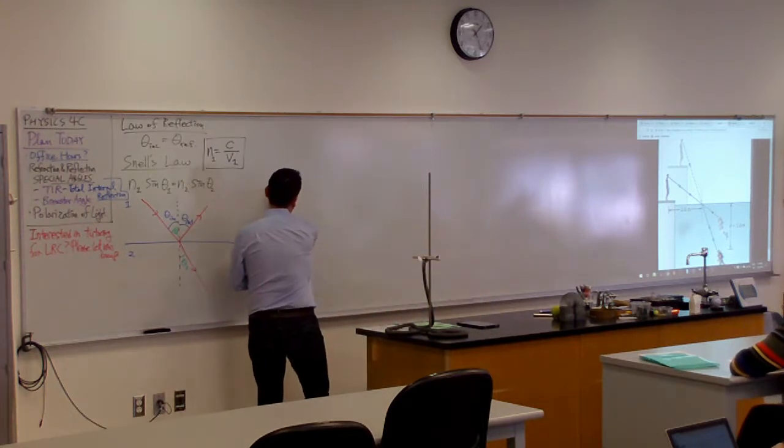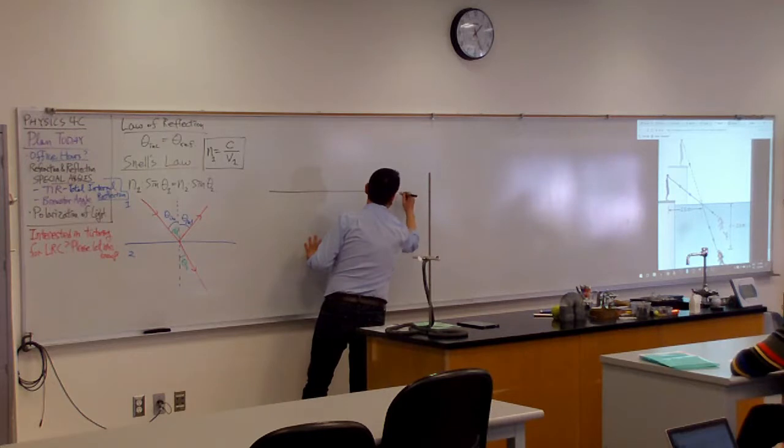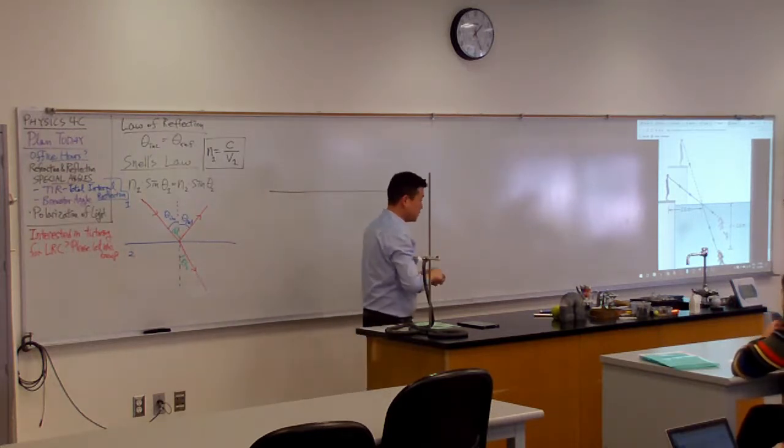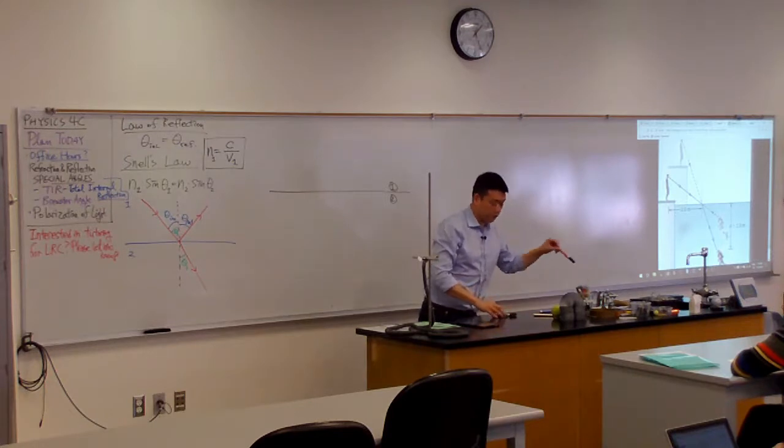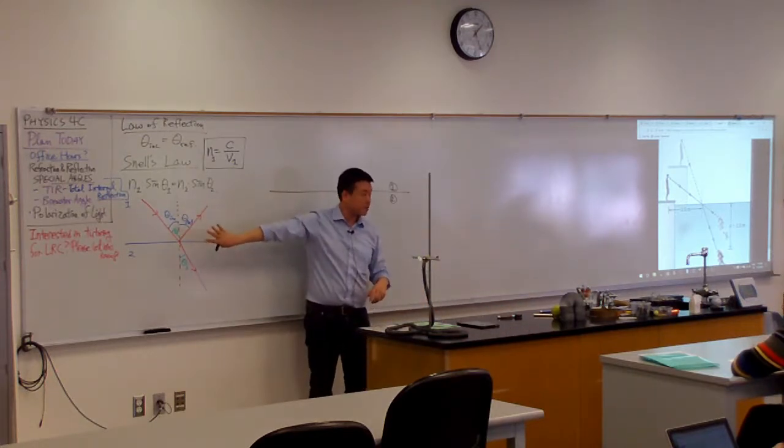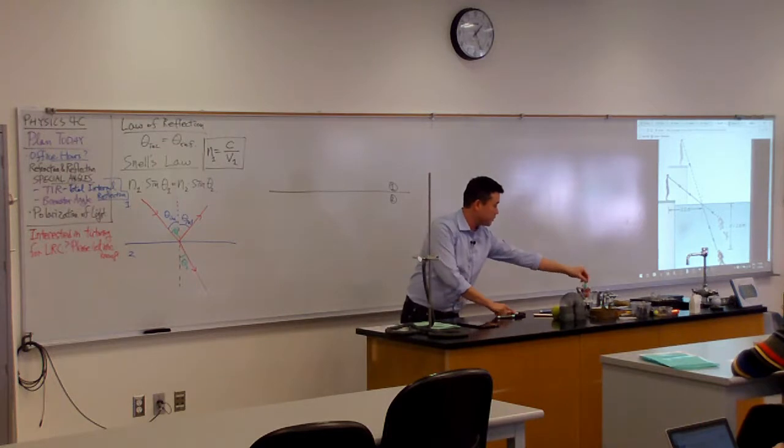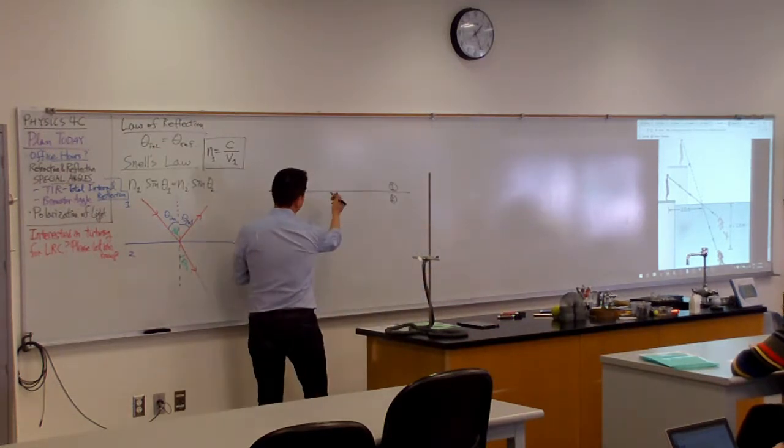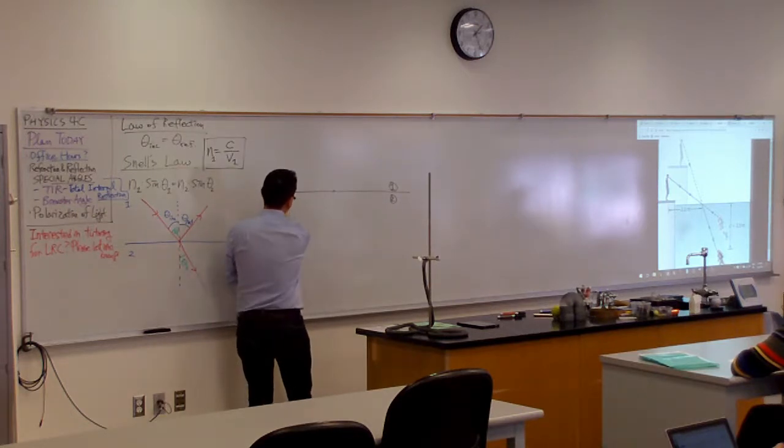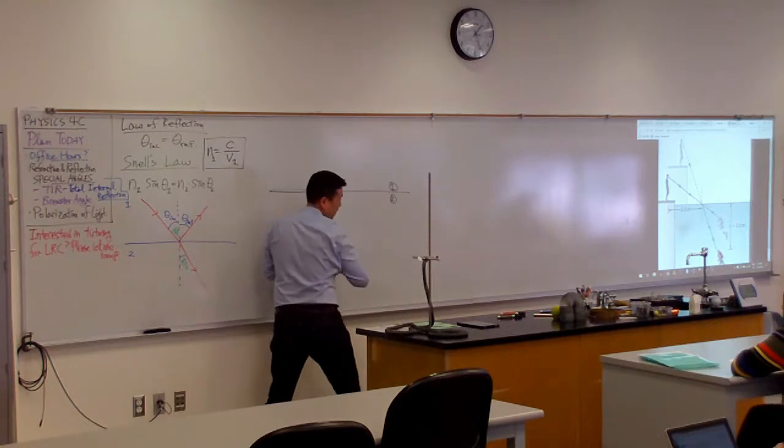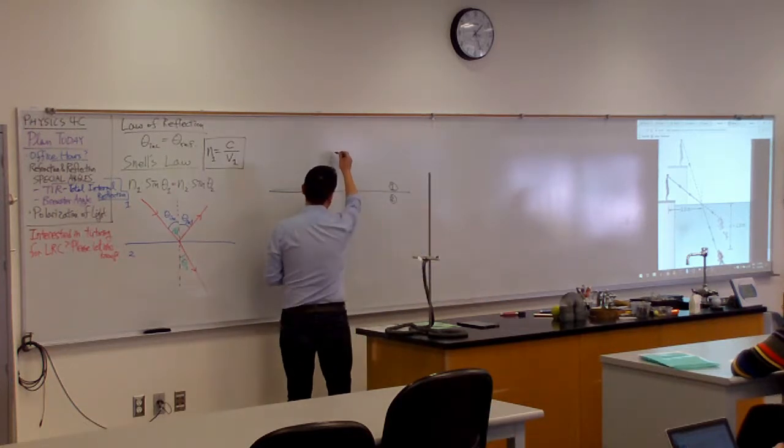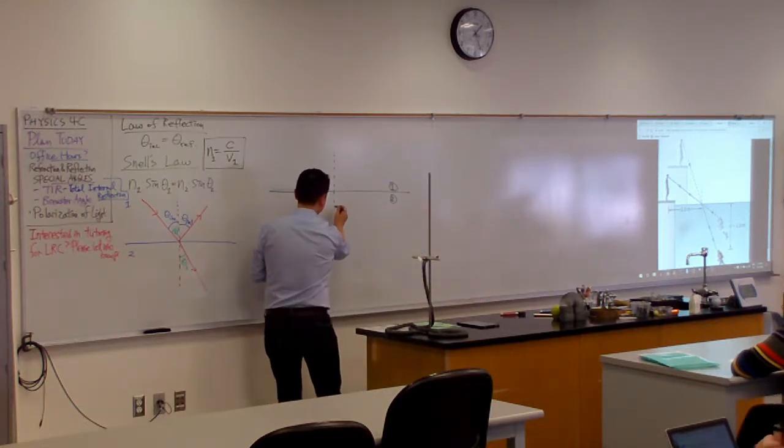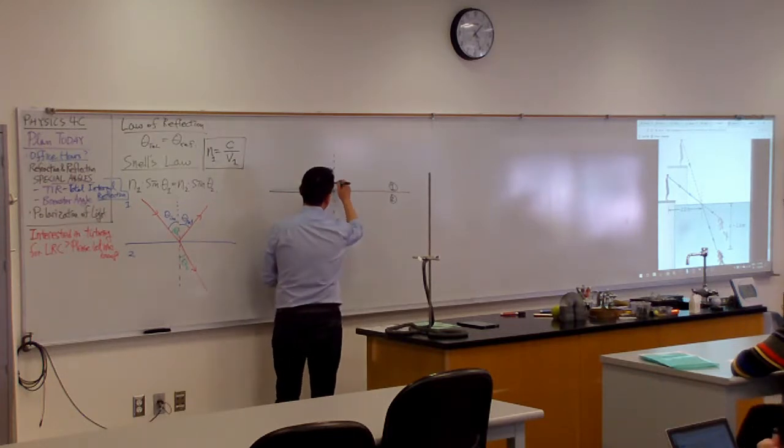So if we have this as the boundary between mediums one and two, then what you can imagine is you could have something that's drawn like this. But another thing you can have is the light can be coming so close to the surface that this angle here is essentially 90 degrees.